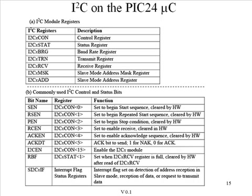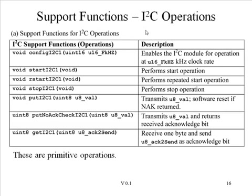As usual, the I2C protocol on the PIC24 microcontroller is implemented in hardware, and a number of control and status registers allow the user to write code which implements the I2C protocol on the PIC. What we'll focus on today is the use of some slightly higher level functions. We'd like, for example, to begin an I2C transaction with a start and end it with a stop. During a transaction, we'll find it useful to put data or get data eight bits at a time on the bus. We're going to focus on using these primitive operations to transfer data to a device on the I2C bus.